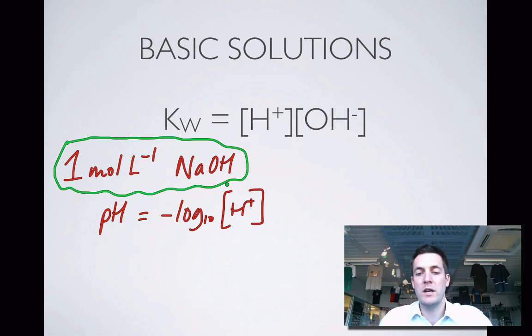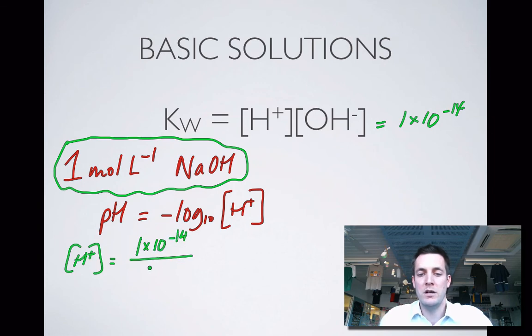But what I can easily do is say that the H plus ion concentration is equal to—remember this is 1 times 10 to the minus 14—so the H plus ion concentration is simply 10 to the minus 14 over the concentration of OH minus. Once I've found the concentration of OH minus, I just divide 10 to the minus 14 by it and I'm given the concentration of H plus. We'll practice some of these calculations in a subsequent film.